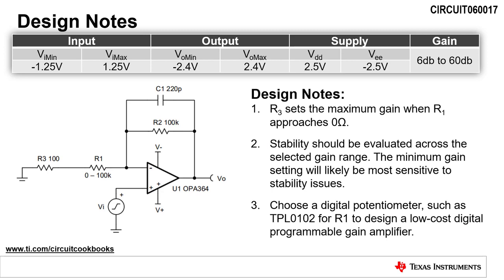When designing a discrete programmable gain amplifier circuit, there are a few design notes to be aware of. First, R3 sets the maximum gain when R1 approaches zero ohms. Next, stability should be evaluated across the selected gain range. The minimum gain setting will likely be most sensitive to stability issues. Finally, choose a digital potentiometer, such as the TPL-0102, for R1 to design a low-cost digital programmable gain amplifier.